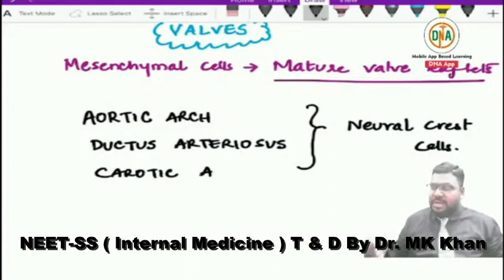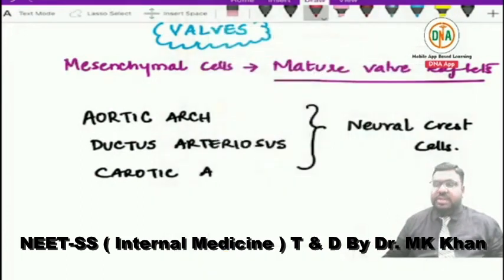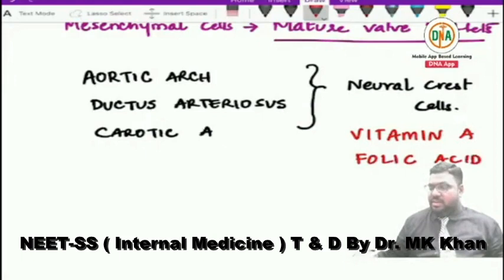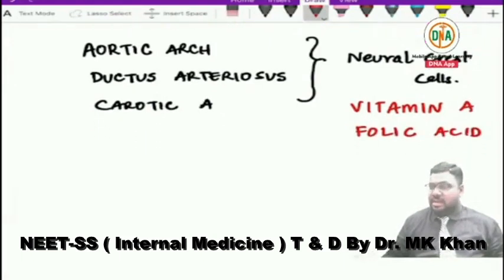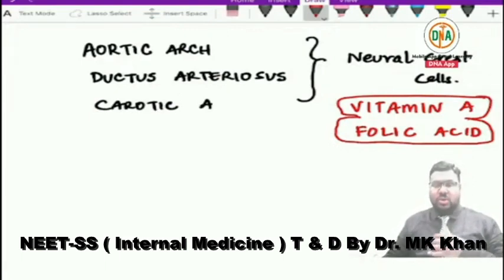During development of the aortic arch, ductus arteriosus, and carotid arteries, the neural crest cells are completely dependent on two important micronutrients: Vitamin A and folic acid. Deficiency of folate or Vitamin A may result in abnormal dysplastic development of neural crest cell derivatives in the cardiovascular system, resulting in various congenital heart diseases.